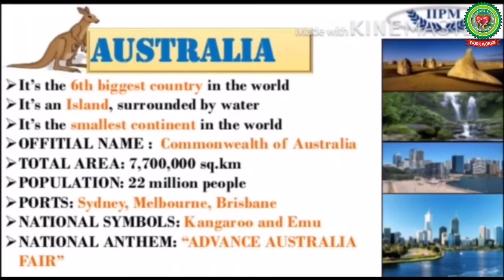Number one: it is the sixth biggest country in the world. Australia is an island continent as it is surrounded by water from all sides. It is also the smallest continent in the world.